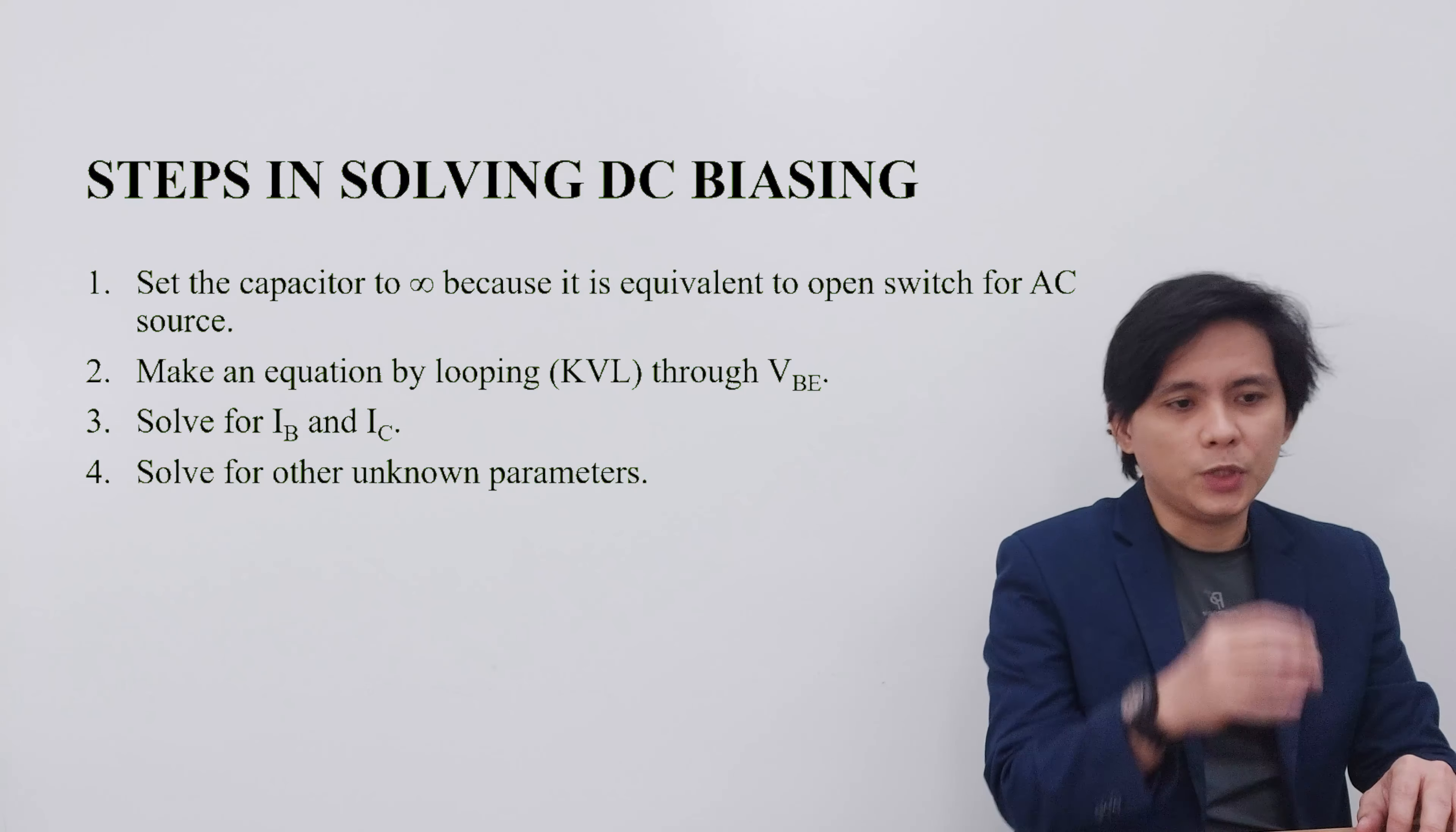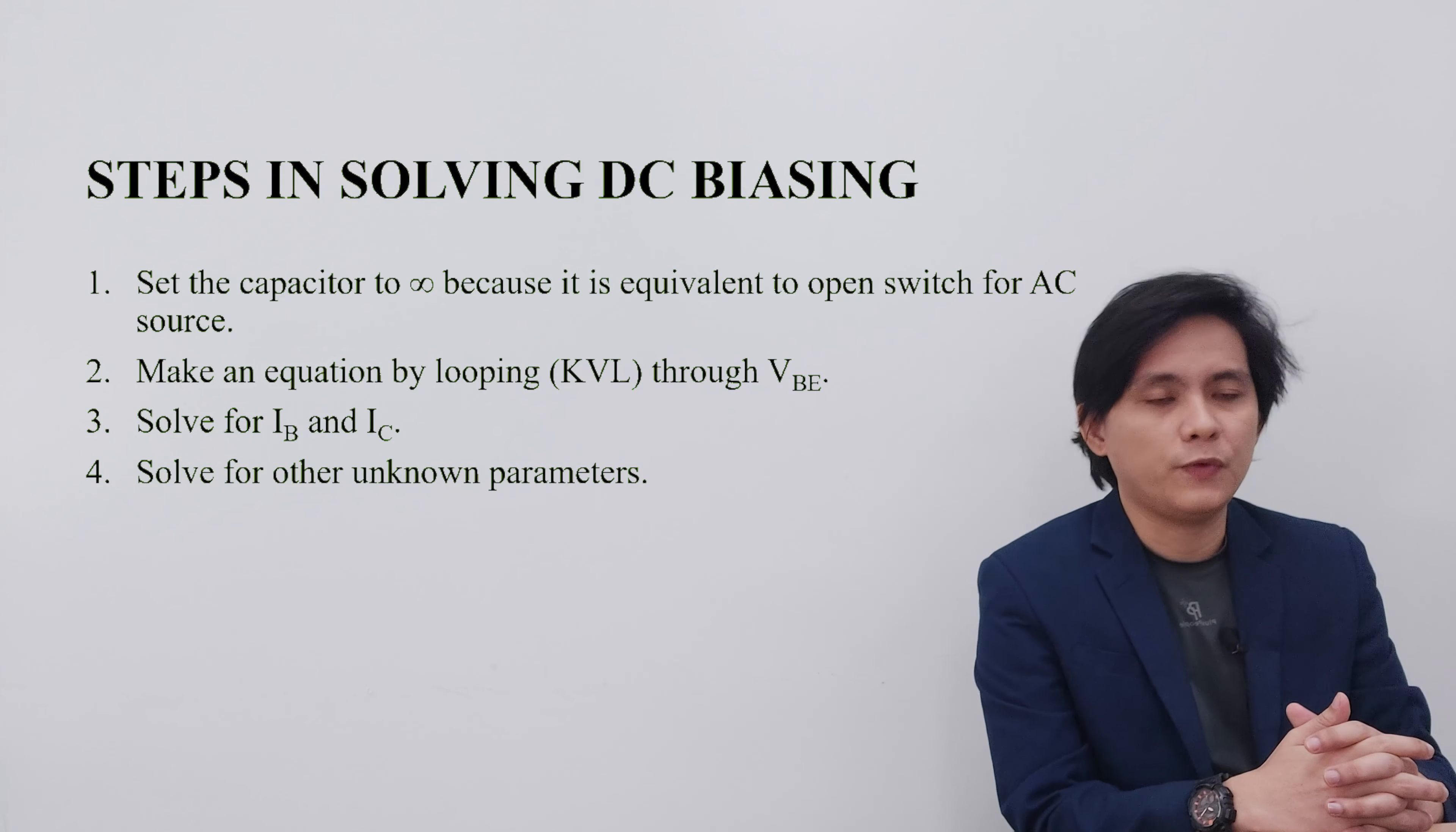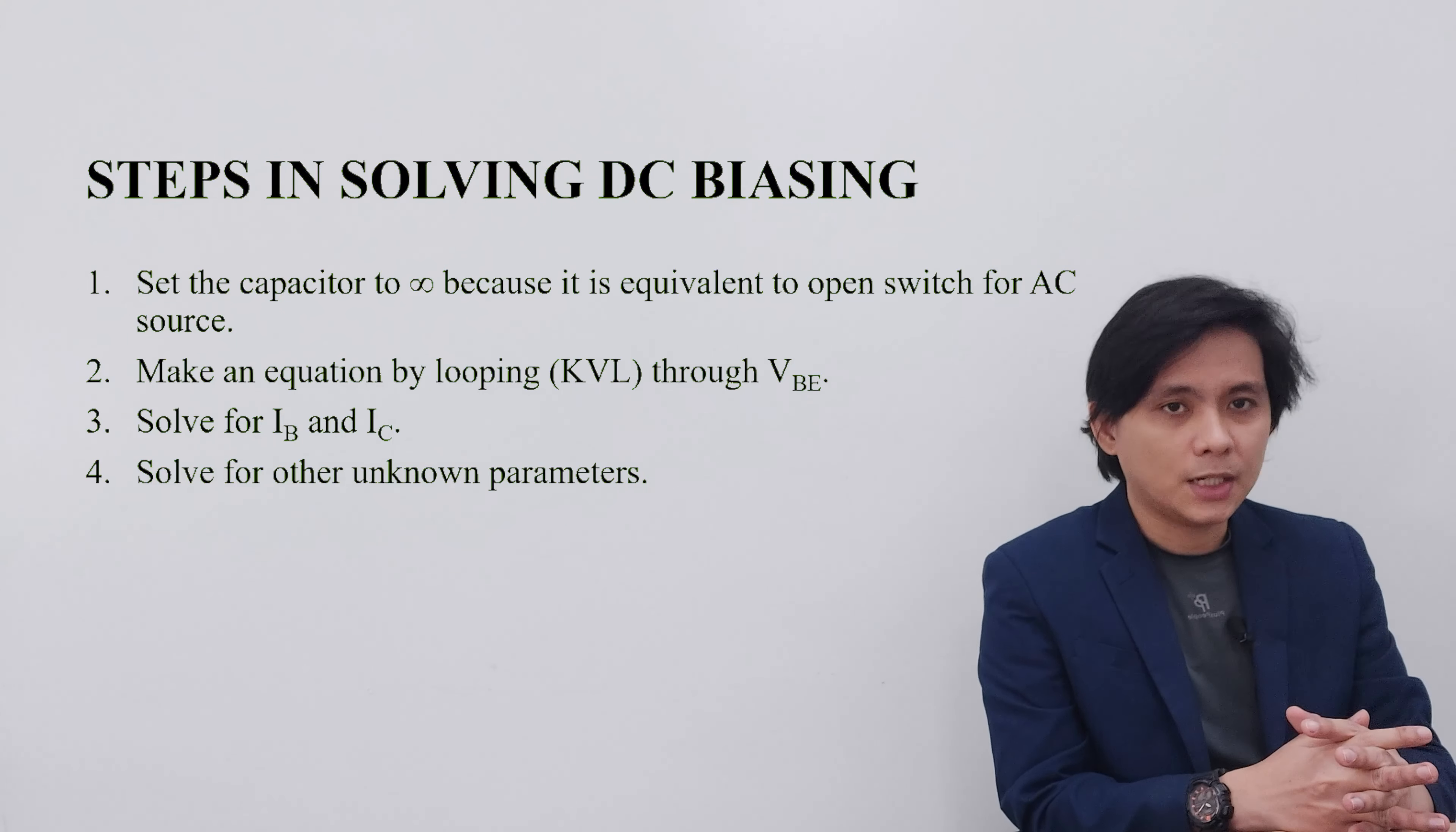To solve for different configurations, there are steps that we should follow. The first one is to set the capacitor to infinity, thus giving an equivalent of an open switch. Because we are dealing with DC biasing, the capacitor will be considered as open because it does not conduct and does not allow DC voltages and currents to pass through it.